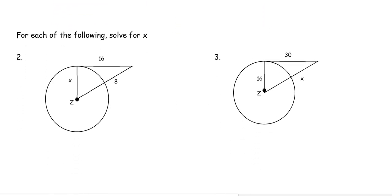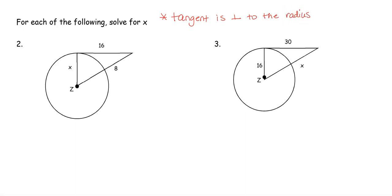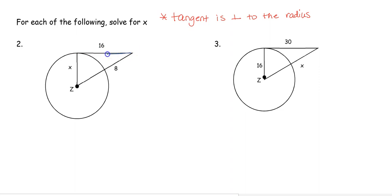Now let's get into our tangent properties. What's really important is that a tangent touches the outside of the circle just one time, and the tangent is perpendicular to the radius at that point. That perpendicular relationship will come up over and over, and we'll use it to apply right triangle trig. Here the segment of 16 is the tangent — it intercepts the circle at one spot — and the radius goes from the center to the outside, making them perpendicular.